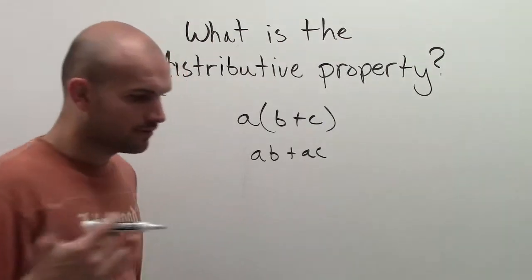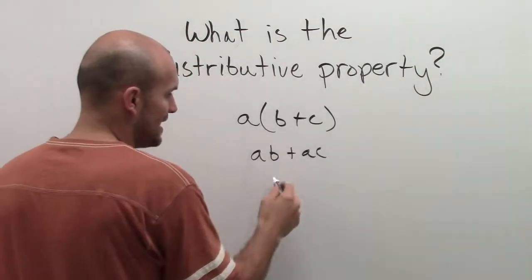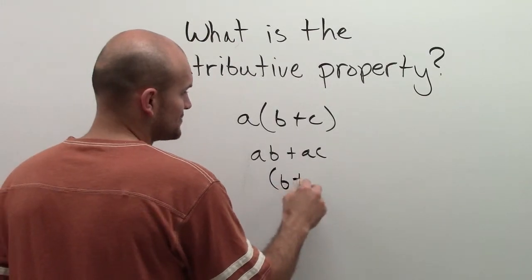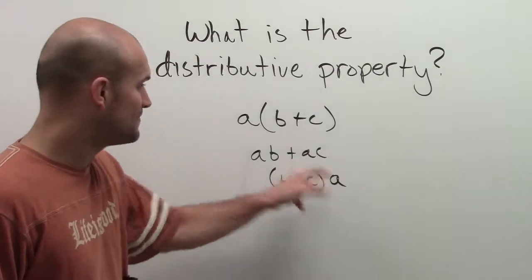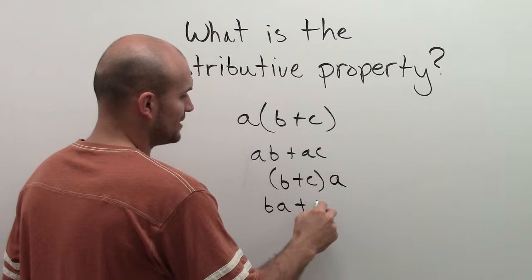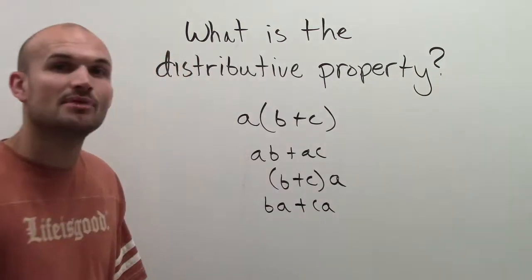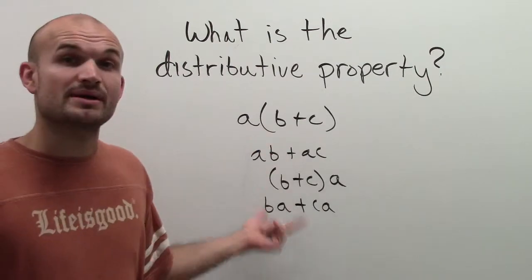Now, what I'll say a lot of students get mixed up with is because it doesn't matter where a is. A could be on the other side as well. And that's still going to be b plus c times a equals a times b plus a times c, or we could even write it as ba plus ca. But since it's multiplication, it doesn't matter which one you multiply first, b times a or a times b.